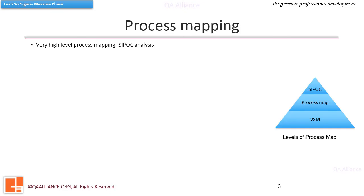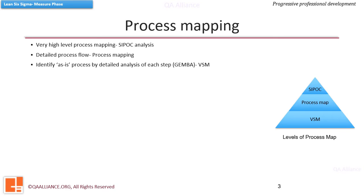When we do SIPOC analysis, we do a very high-level process mapping. The next level of details are captured through process maps, which are detailed flow diagrams of the process using color-coded symbols that drill further into the high-level map generated in the SIPOC. While analyzing a process, the purpose is to visually represent the process as it is in reality — and this is where value stream mapping comes into picture.